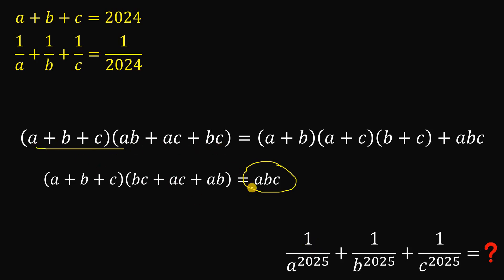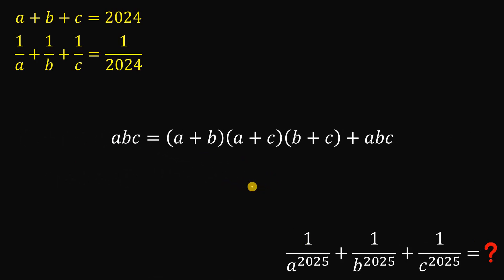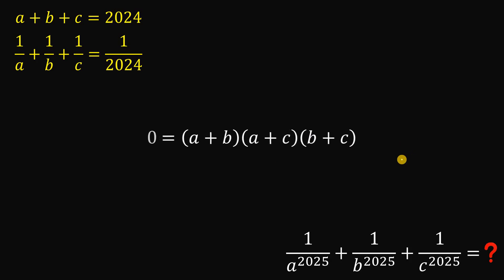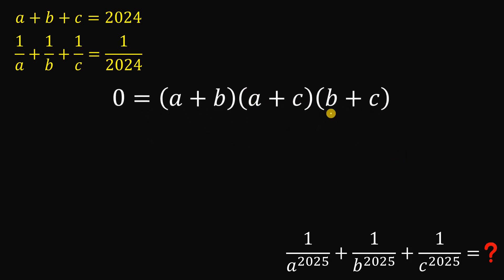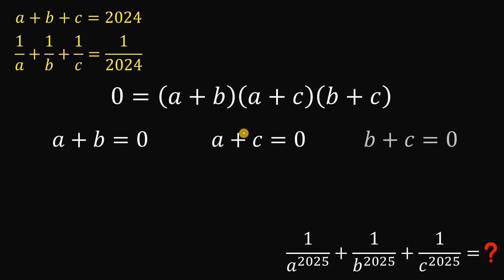So we can replace the left-hand side of the identity with ABC. If we then subtract ABC from both sides, the right-hand side becomes 0. Therefore, A plus B, times A plus C, times B plus C, equals 0.